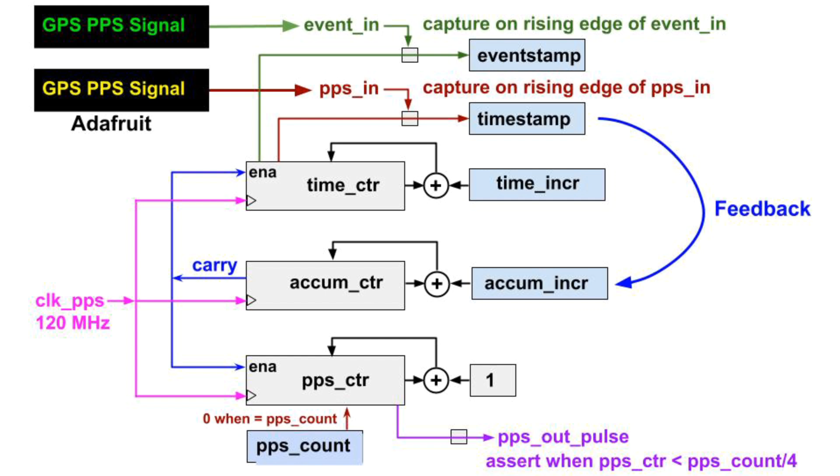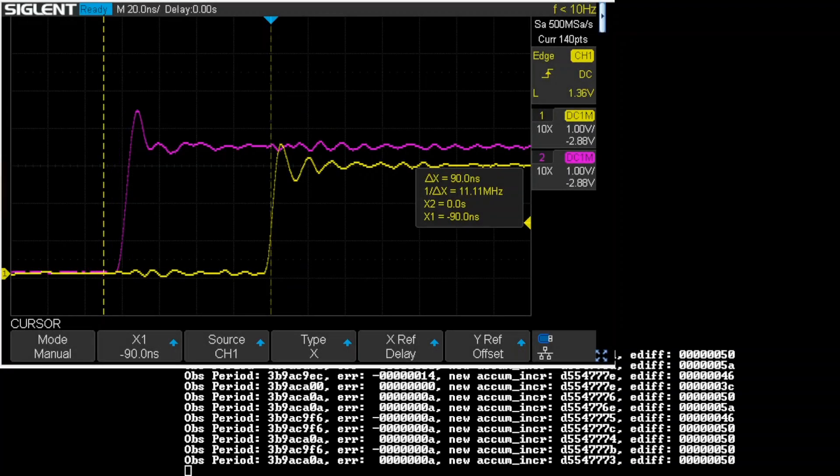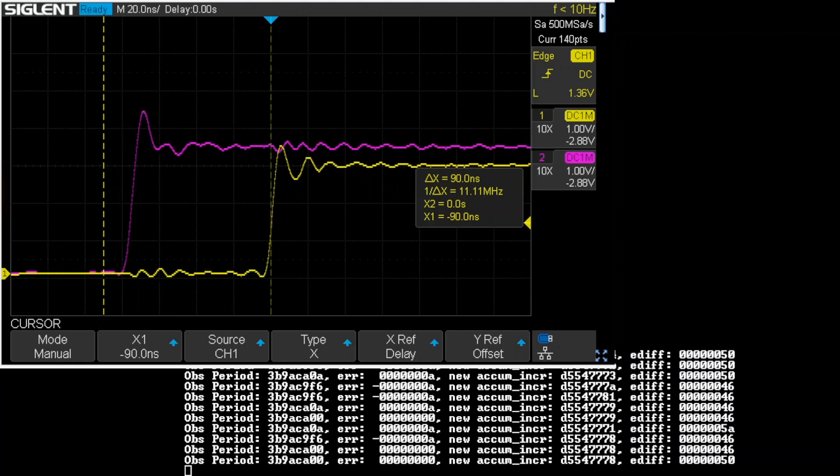The rising edges from the two GPSs are supposed to be extremely close to a one-second boundary in real-world time. Thus, they should be close to each other. There is a scope capture on top. It's showing the rising edges of the PPS signals from the two GPS receivers. For scale, the cursor is showing a 90-nanosecond difference from the yellow trace from the Adafruit GPS. So, the rising edges are happening pretty close to each other in real-time, as expected.